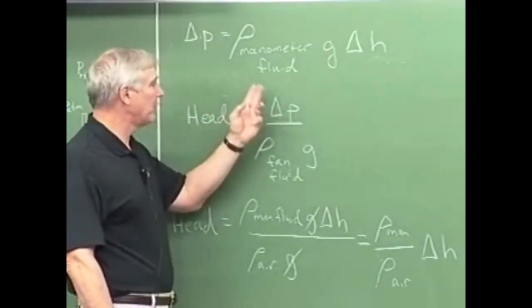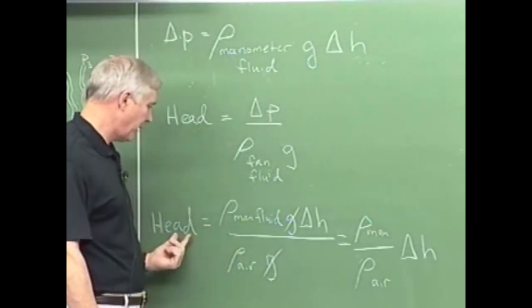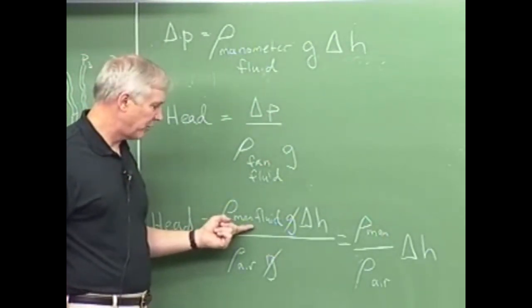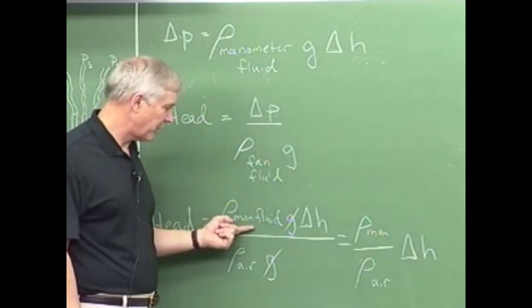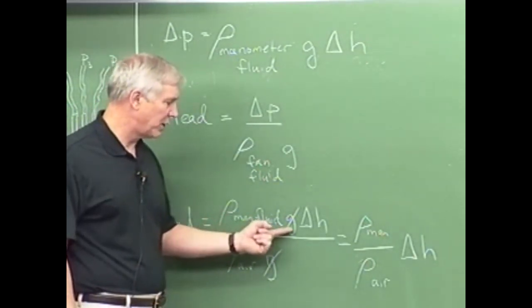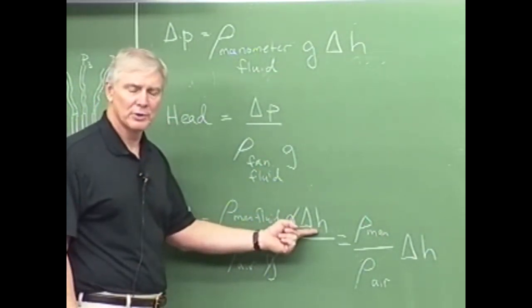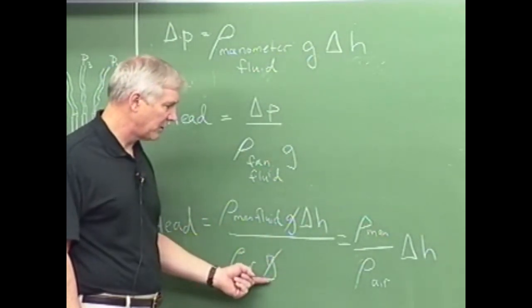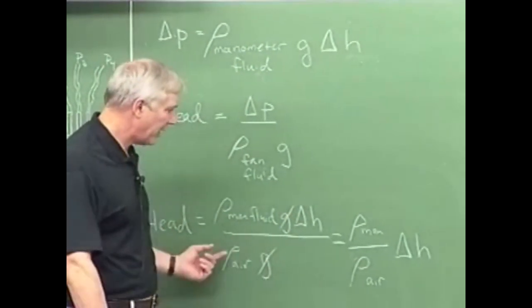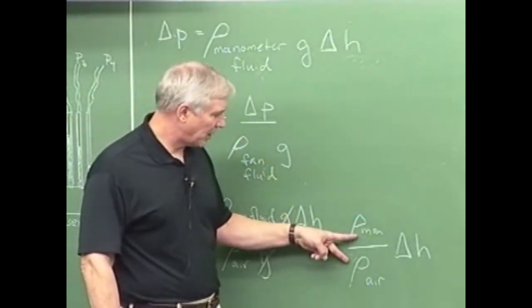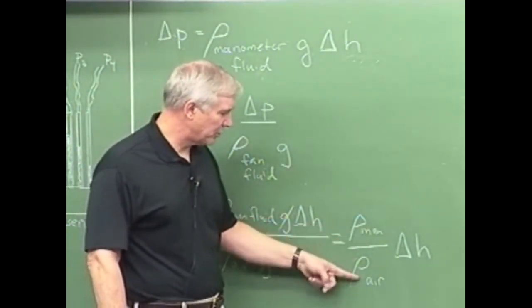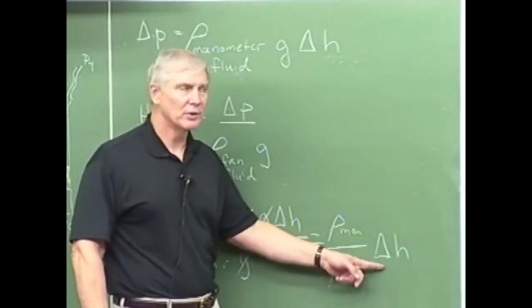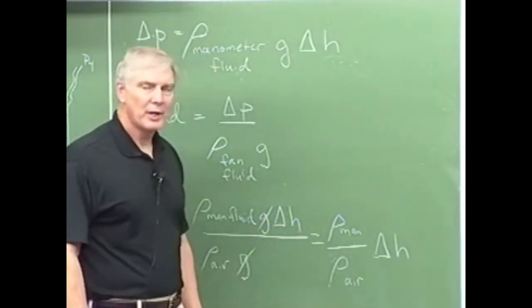Well, then we have to substitute in our expression for delta P. So the head is equal to, in the numerator, we have the density of the manometer fluid times G times delta H of the manometer fluid. And in the denominator, we have the density of the air times gravity. So ultimately, the head is the ratio, that's the density ratio, the manometer fluid to the air times delta H, the delta H which is the difference in the height of the fluid.